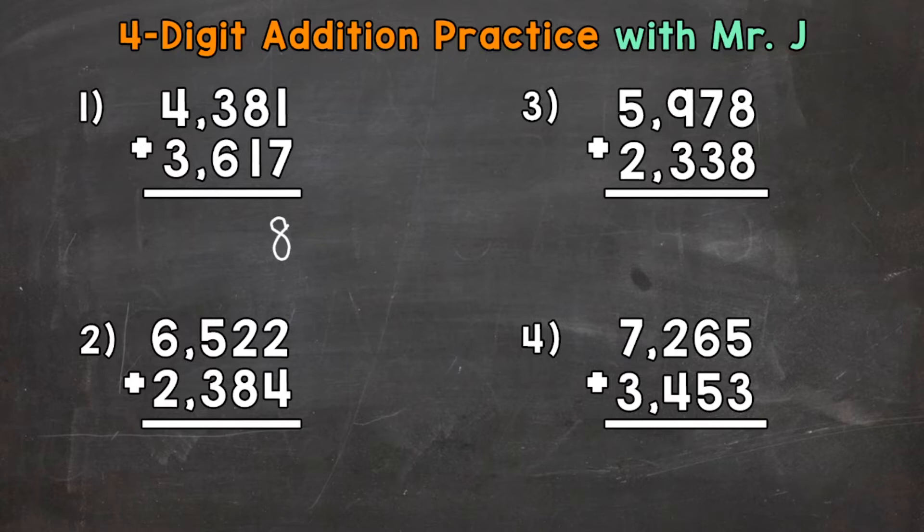Then we work our way left to the tens place. So we have 8 tens plus 1 ten. That gives us a total of 9 tens. 8 plus 1 is 9. So a 9 in the tens place. Now we move to the hundreds place. So 3 hundreds plus 6 hundreds. 3 plus 6 gives us a total of 9. So a 9 in the hundreds place.